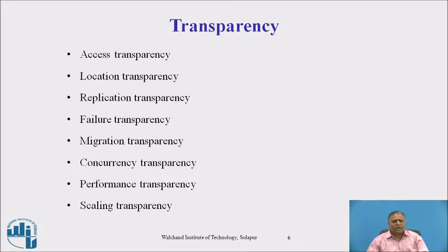Replication transparency means the existence of multiple copies of a resource and replication activity is hidden, with replica management issues. Failure transparency involves masking the user from partial failures in the system. Complete failure transparency is not achieved in distributed operating systems due to communication link failure, as it is very slow and expensive to design complete failure transparency.